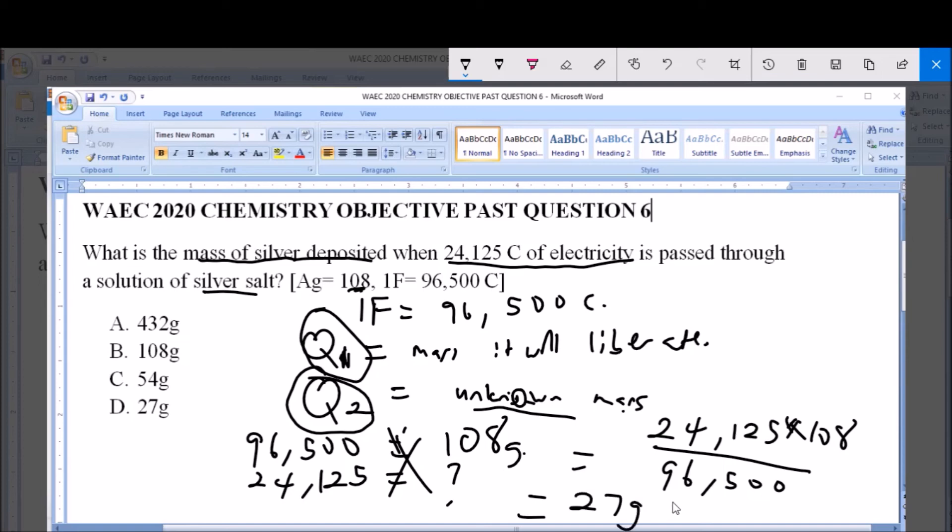And 27 grams is option D, as we have seen, or as we rightly see here. So D, 27 grams, is the mass of silver deposited when this quantity of electricity is passed through a solution of silver salt.